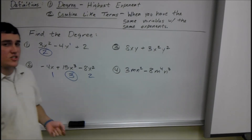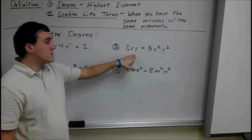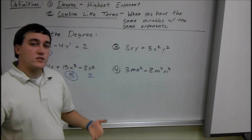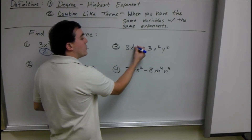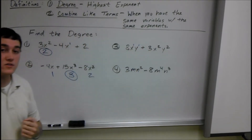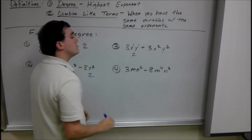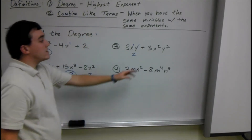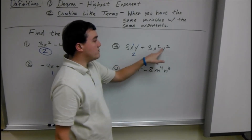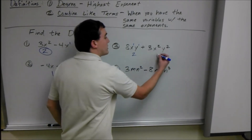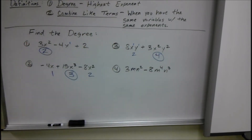Now that can change a little bit whenever you have multiple letters. What you're doing to find the degree is you add the exponents. So here we have x and y — we know both of those exponents are 1s, so the degree of that term is going to be 2. The degree of the second term, which is 3x squared y squared, just sum the exponents. The degree here is 4, so that's the degree of the entire polynomial.